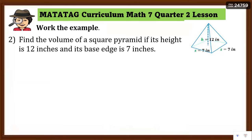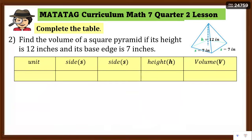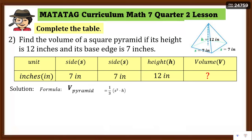Example 2: Find the volume of a square pyramid if its height is 12 inches and its base edge is 7 inches. The side is 7 inches and the height is 12 inches. Complete the table: unit is inches, side is 7 inches, height is 12 inches, and volume is what we need to find. Recall the formula: the volume of a square pyramid is one-third times the square of the side times the height.